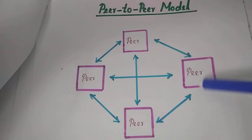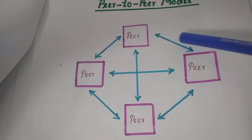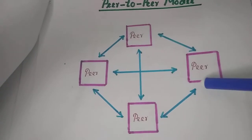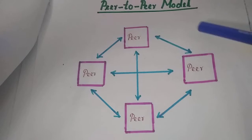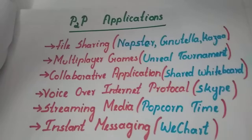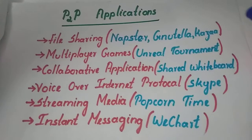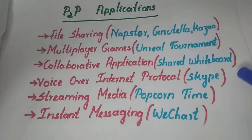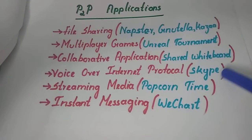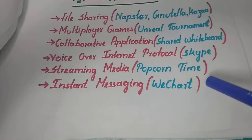There is no master and slave system in this peer-to-peer model. All the systems coordinate among themselves to find the requested resource in the distributed system. Some applications of peer-to-peer networks include: Napster, Gnutella, and Kazaa — distributed file sharing services; Unreal Tournament — a multiplayer game; Shared Whiteboard — a collaborative application; Skype — a Voice over Internet Protocol service; Popcorn Time — a streaming video service; and Vchat for instant messaging.